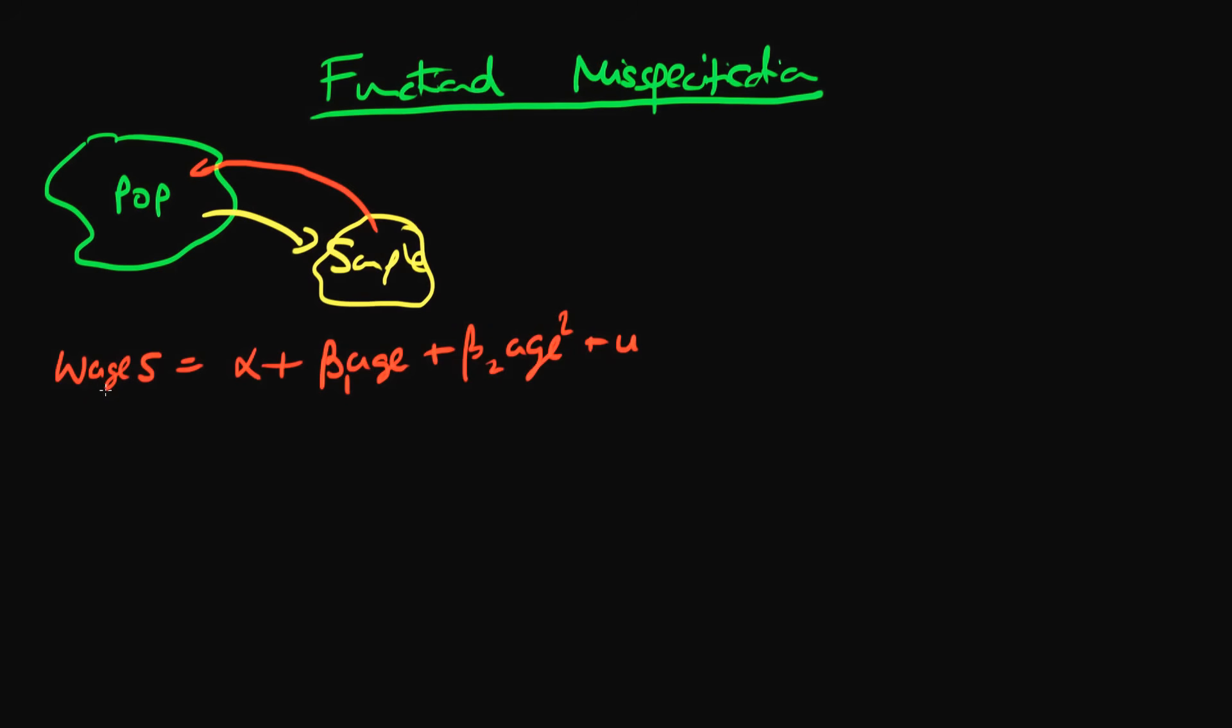In this equation beta 1 would be greater than zero and beta 2 would be less than zero, and that's because you can think about there being sort of an inverted U shape in terms of the return of age to wages.